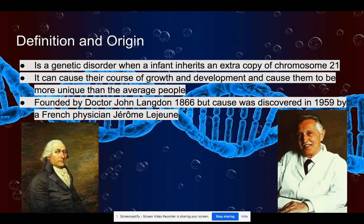So what is Down syndrome? Down syndrome is a genetic disorder that happens in newly born babies. It causes them to have an extra copy of chromosome 21, which can cause growth defects like developing differently than normal kids. This was founded by Dr. John Lex in 1866, but a French physician, Germain Lejeune, went in depth and discovered it in 1959.